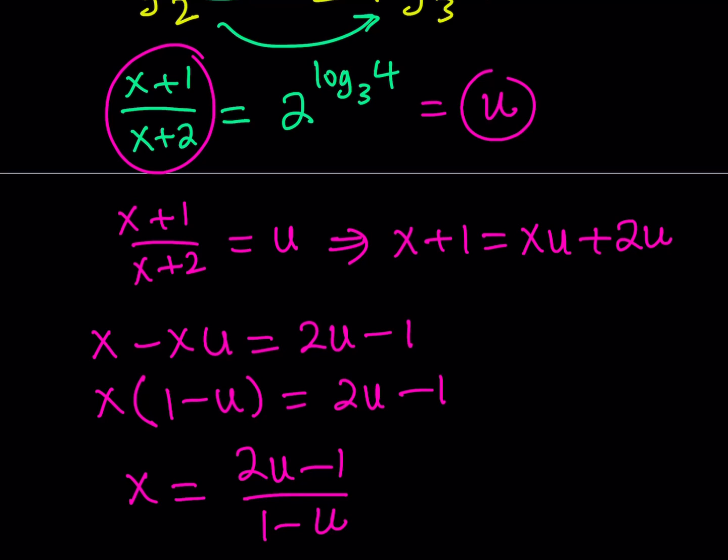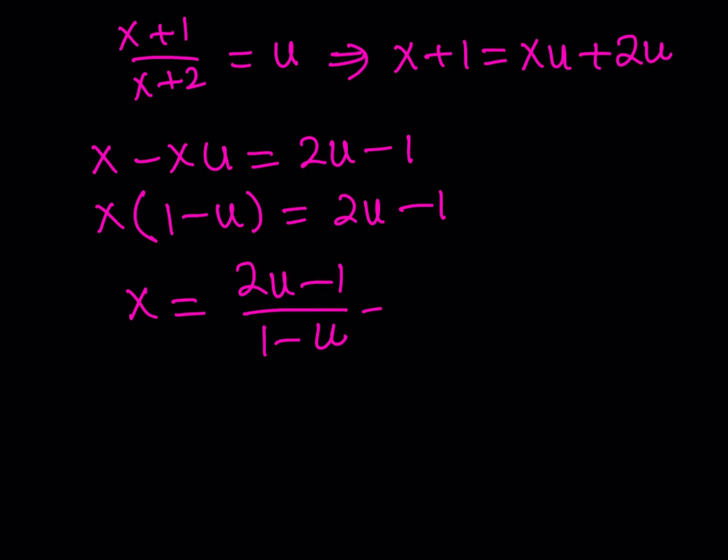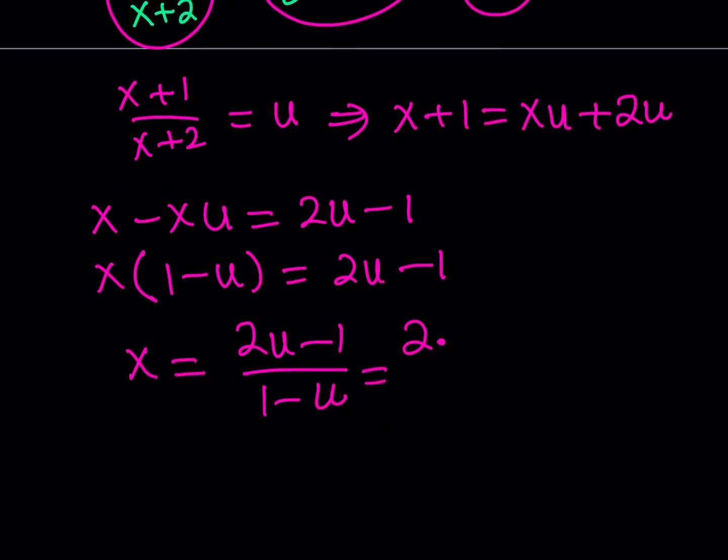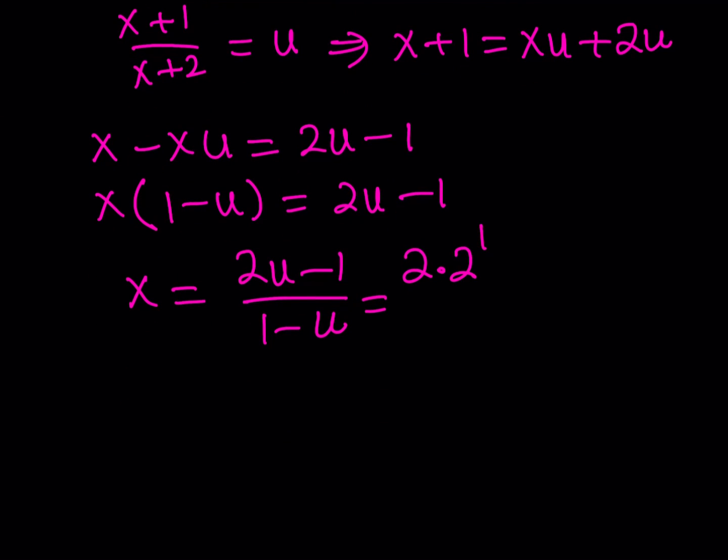Now what's significant though? Why did I do this? Because if I didn't then I would have to write log 2 every time and I didn't want to do it. So now what I can do is I can back substitute and u is equal to this. So I can just go ahead and replace u with that. Let's go ahead and do it. 2 times and what is u? 2 to the power log 4 base 3 minus 1 over 1 minus 2 to the power log 4 base 3.